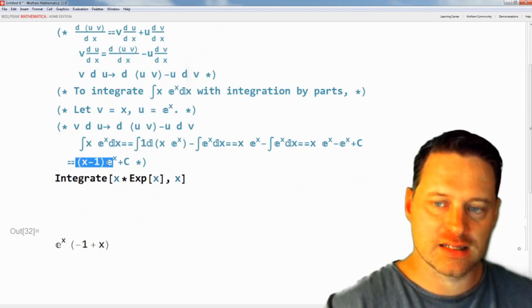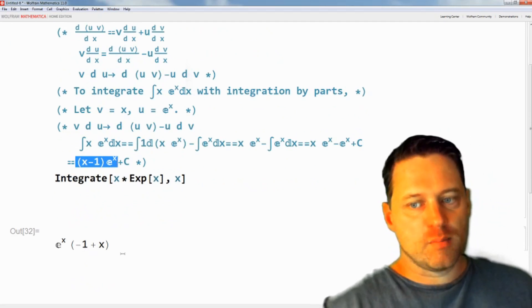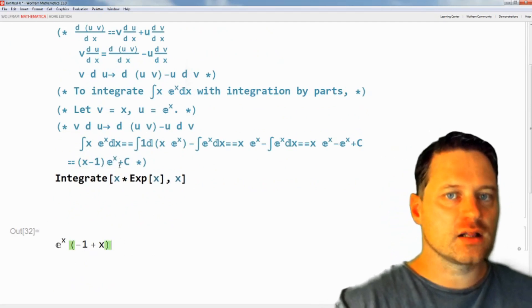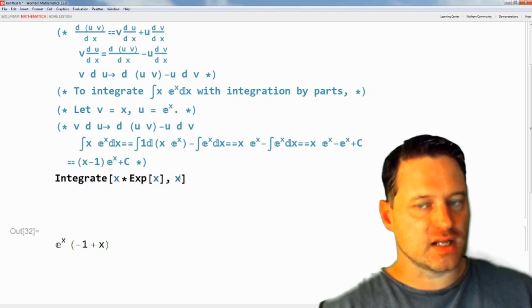It says e to the x times minus 1 plus x. That is exactly the same as x minus 1 all times e to the x. But you notice that it does not include the plus c. If you want to be correct, you add the plus c.